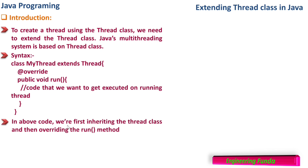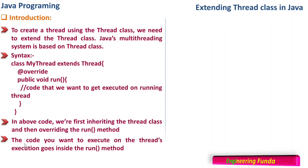In the above code, we are first inheriting the thread class and then overriding the run method. The code you want to execute on the thread's execution goes inside the run method. Remember, the return type of this method is void and its access modifier is public.